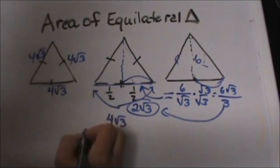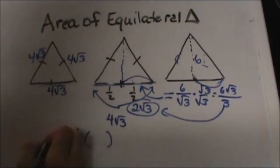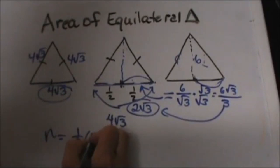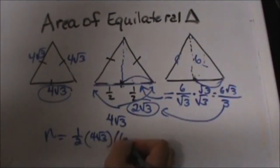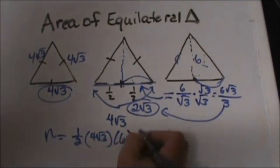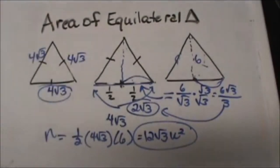Now let's plug in: one half of the base — our base is 4√3 — times our height, which we were given as 6. Half of 4 is 2, and 2 times 6 is 12, so the area is 12√3 square units. And that is how you find the area of an equilateral triangle when you're given the altitude and have to work backwards. Hope this video was helpful.